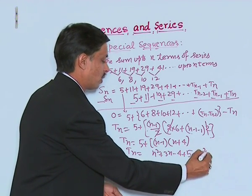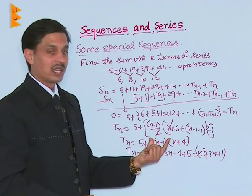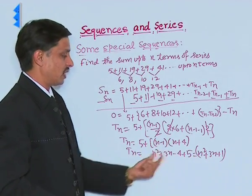This becomes n square plus 3n plus 1. With this pattern method we have obtained its nth term.